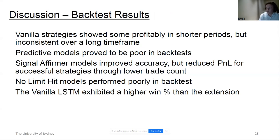Taking this to the actual backtest results: vanilla strategies showed mixed results — some profitable in shorter periods, but over the four-year mapping data almost all performed poorly, suggesting vanilla strategies may work in some periods but none were consistent over the long term. Predictive models again proved poor in the backtest. The signal affirmer models improved accuracy but reduced profit and loss for successful strategies through lower trade count. The no-limit hit models simply performed poorly. The vanilla LSTM exhibited a higher win ratio than the extended model on the commodity channel index, the best-performing strategy.